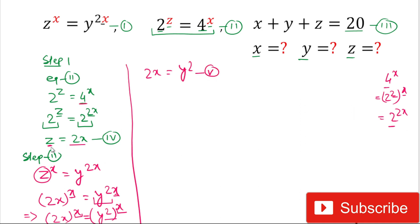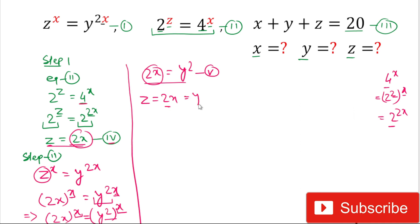Comparing equation 4 and equation 5, we have z equals 2x from equation 4, and 2x equals y squared from equation 5. Therefore we can write z equals 2x equals y squared.